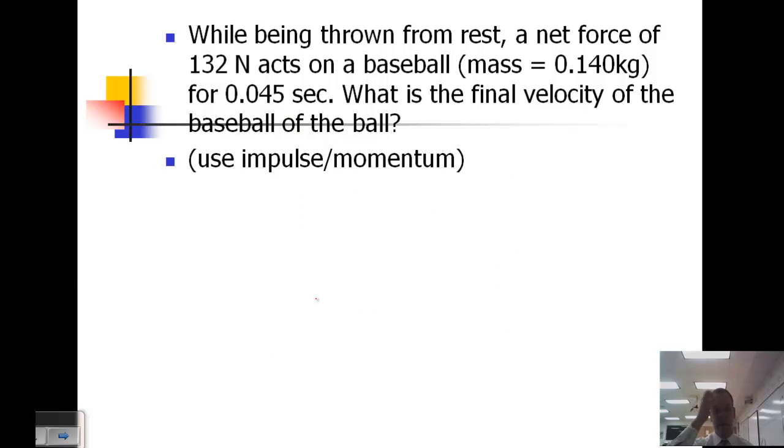While being thrown from rest, a net force of 132 Newtons acts on a baseball for 0.045 seconds. What is the final velocity of the baseball? We want to use impulse and momentum.